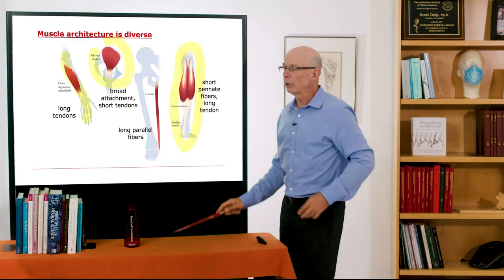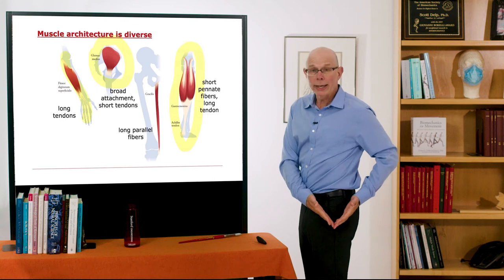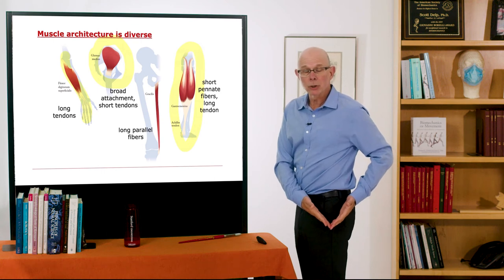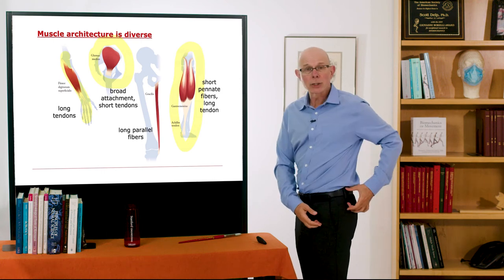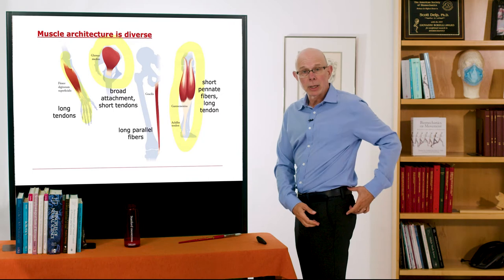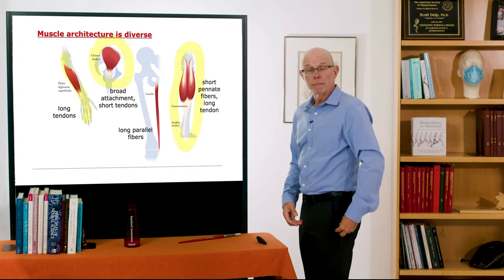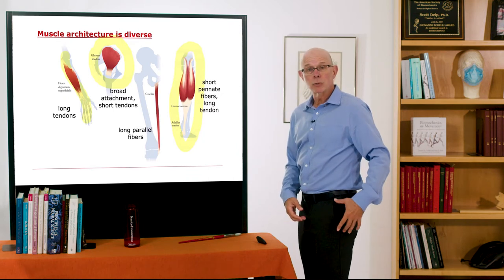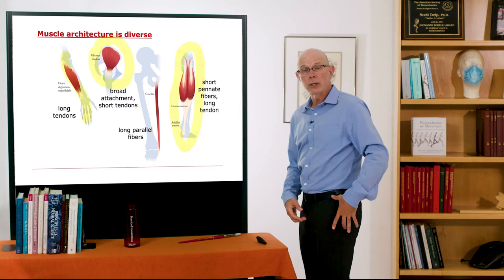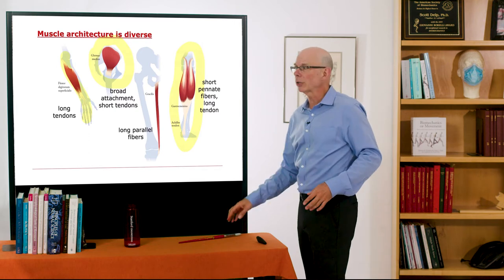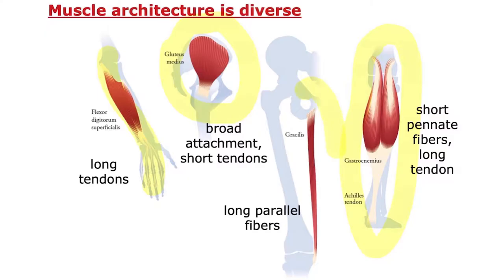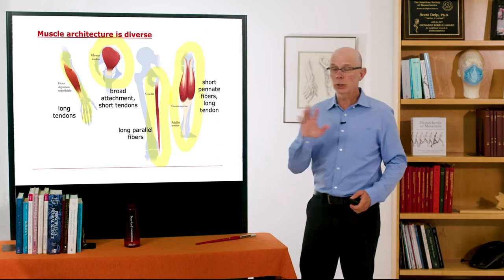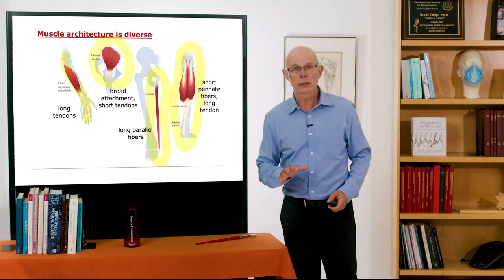Up in the hip, the gluteus medius is a triangular-shaped muscle with a broad attachment on the ilium down to the femur, with relatively short fibers and a big cross-sectional area. The gracilis is a muscle on the inside of the thigh with long parallel fibers, much like the sartorius. So you can see that muscle architecture throughout the body is quite diverse.